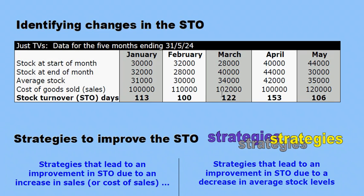Between March and April, the stock turnover went from 122 to 153 days — more days, which is unfavorable, taking more days on average to convert stock to sales. There's been a decrease in sales, but also a significant increase in the average stock levels, which once again indicates inefficient management of stock.